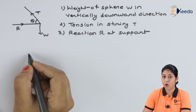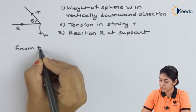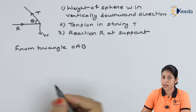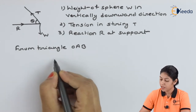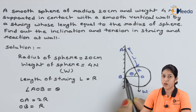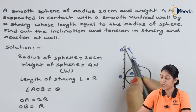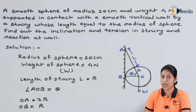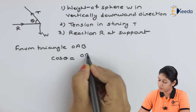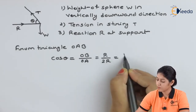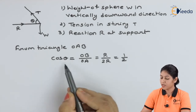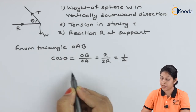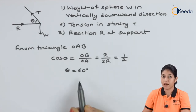From triangle OAB, we find the value of theta. The cos theta equals OB divided by OA. Here OB is R and OA is 2R, so cos theta equals R divided by 2R, which equals 1/2. Therefore the value of theta is 60 degrees.